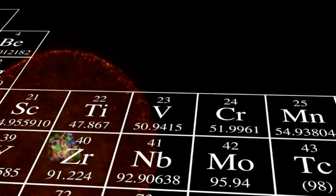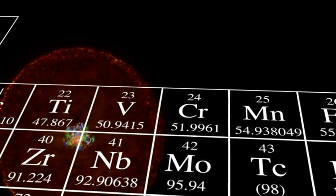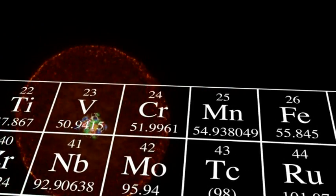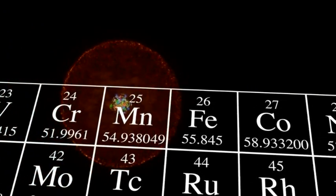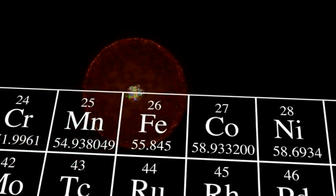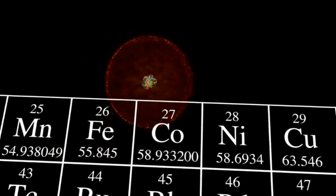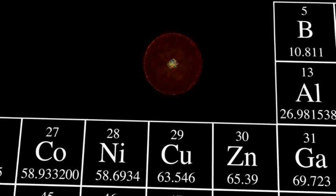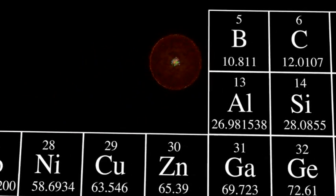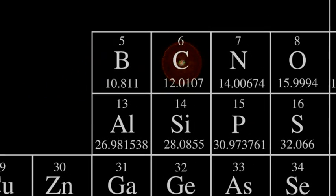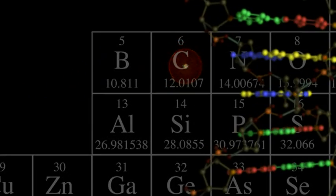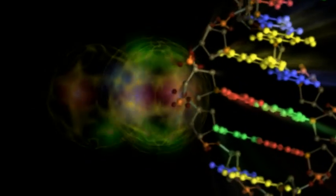Carbon is a critical ingredient for life on Earth. All living things are made up of about 25% carbon. The carbon atom is unique because it can bind to other carbon atoms to form long chains and rings, and these in turn serve as the backbone of complex molecules that make life possible.